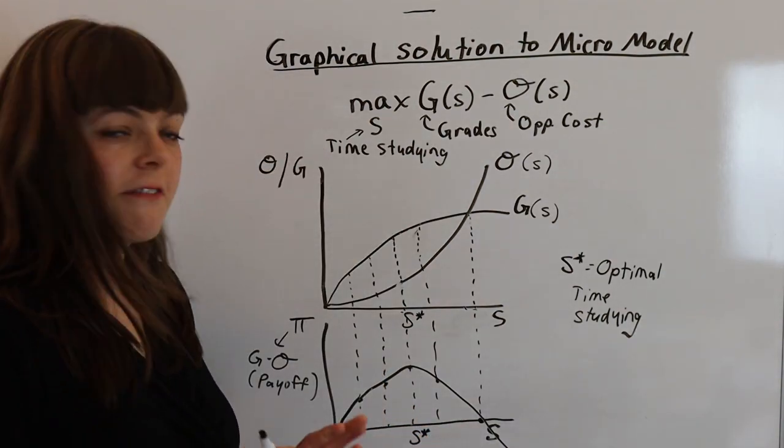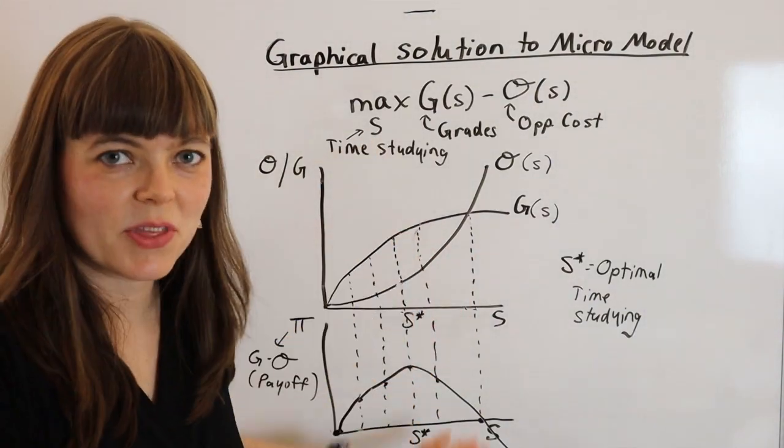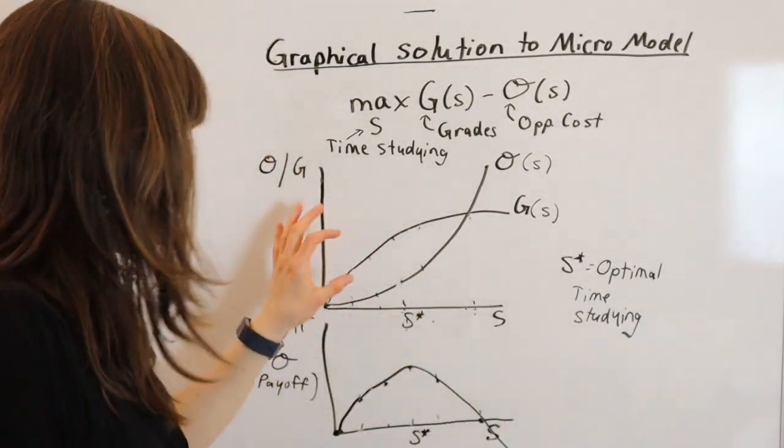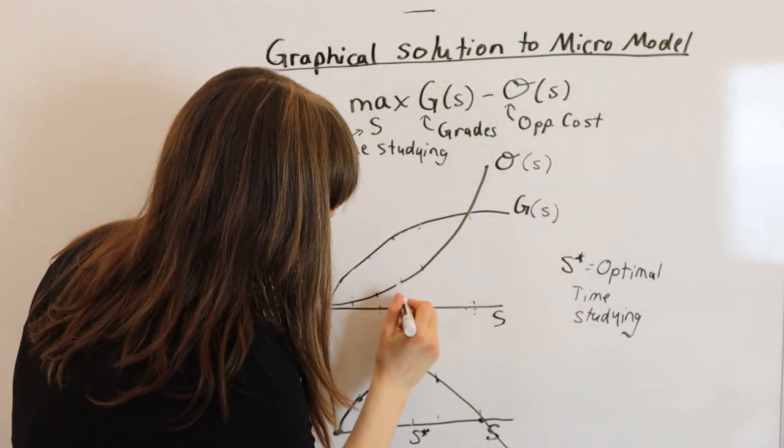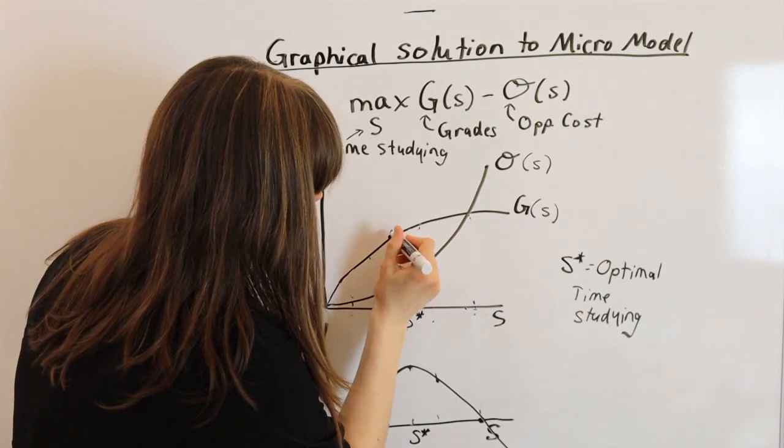Now, there's another fun thing that happens here. First, let me clean this up because it's gotten a little bit messy with all those lines I just drew. Another fun thing about this is the fact that at our optimal choice, the tangent of our benefit,